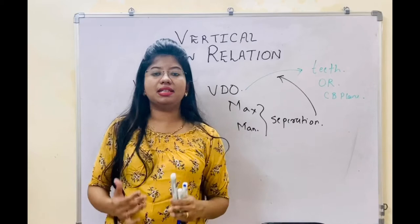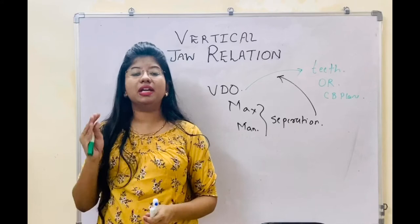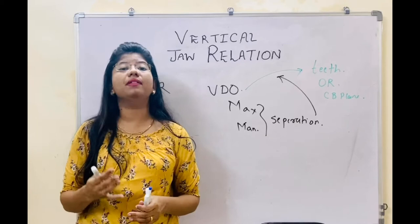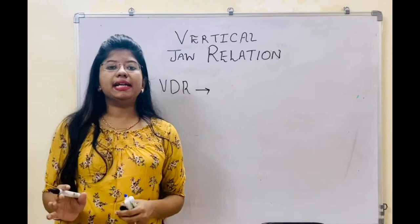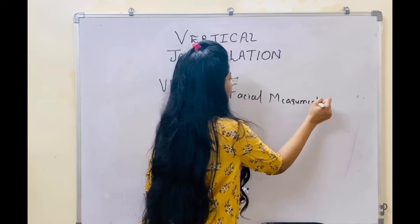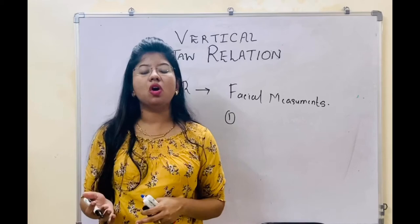So it is very important to give your patient a denture at the correct vertical dimension. How can you do that? First we will see the methods for vertical dimension of rest, then we will see how to record vertical dimension at occlusion. Vertical dimension at rest can be recorded with the help of facial measurements. The first method under facial measurements can be swallowing or relaxation.